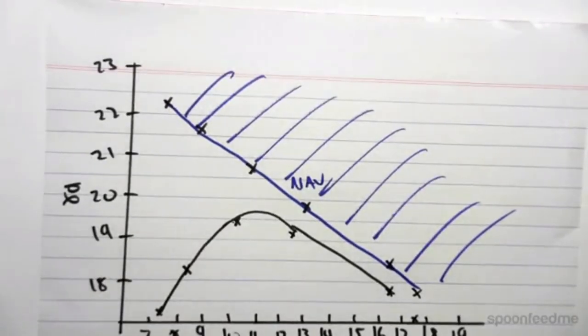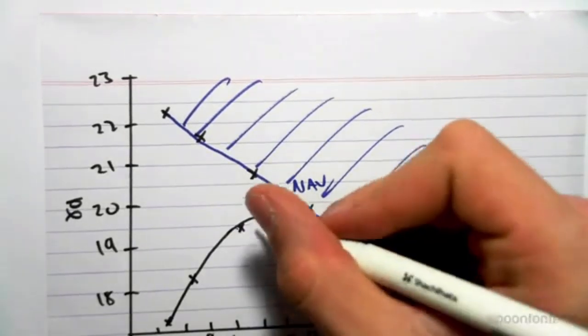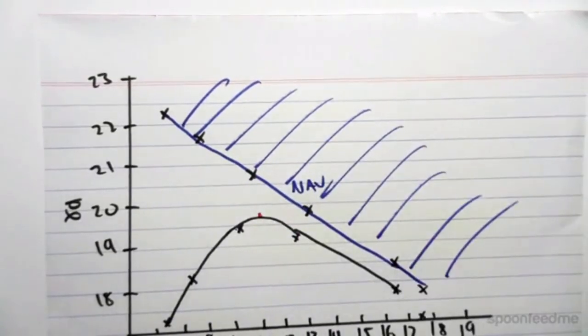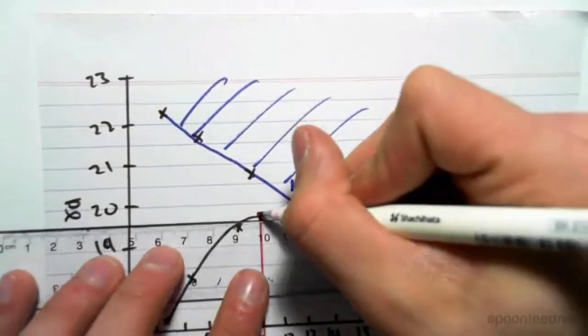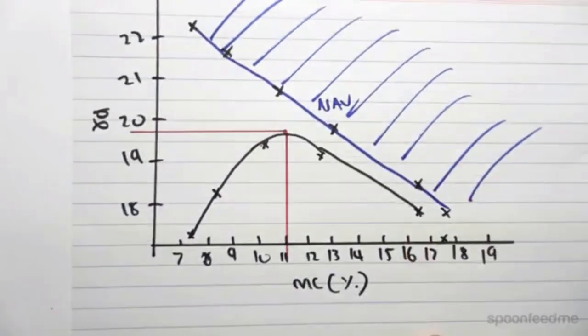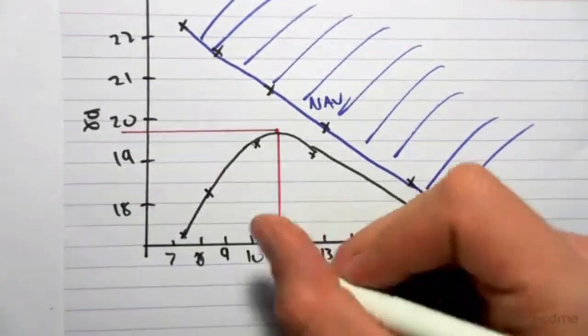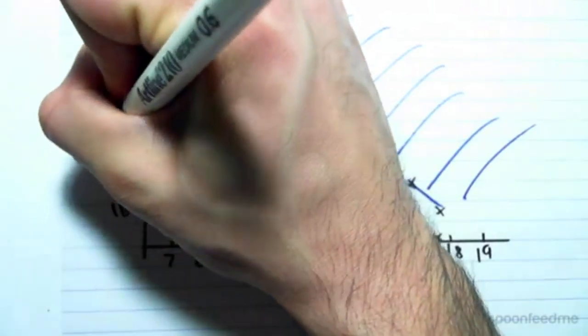Based on this graph, we can determine our optimum moisture content and our maximum dry unit weight. We would come to our graph, we would see that that point there is roughly the maximum. We would then get our ruler, we drop a line down and across.